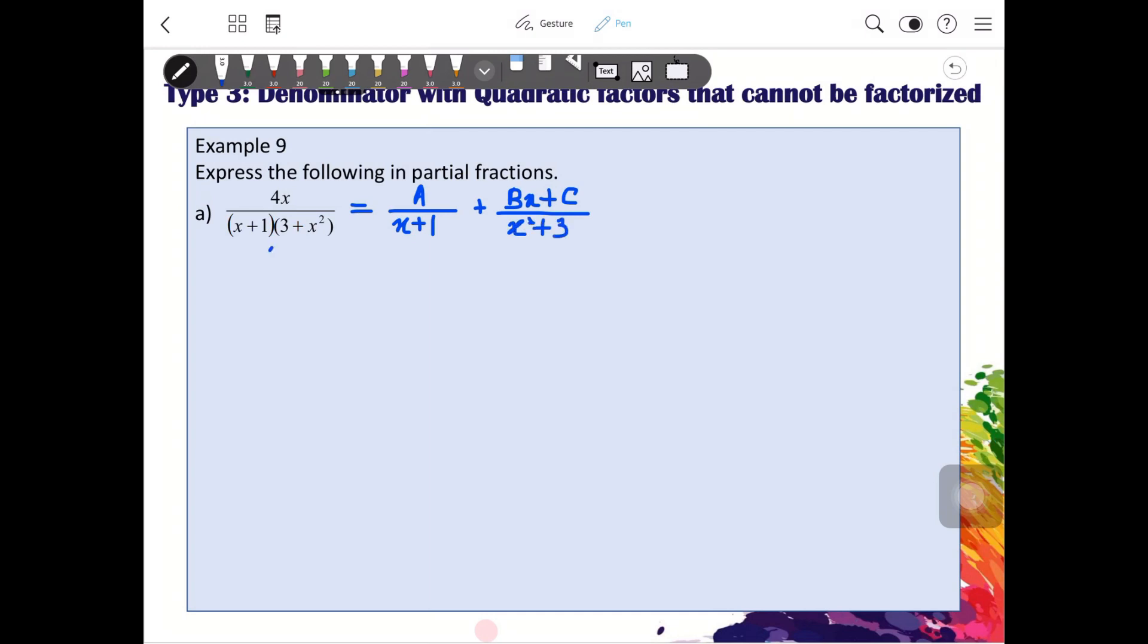It's actually the same, so it's better in this way. Then we will have 4x is equal to A times x squared plus 3, plus bracket Bx plus C times x plus 1.